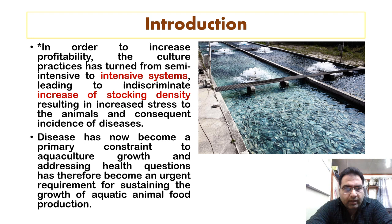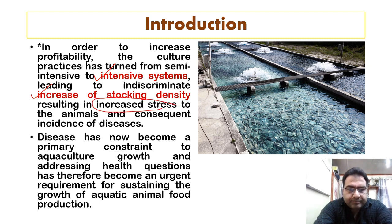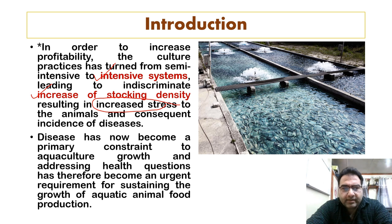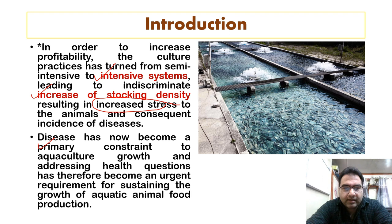We have turned from semi-intensive to intensive systems of aquaculture and increased the stocking density, resulting in increased stress to the animals and a consequent rise in disease incidence. When we increase stocking density, there are greater chances that diseases may spread rapidly in fishes. Disease has now become a primary constraint to aquaculture growth, making it an urgent requirement to sustain aquatic animal food production.